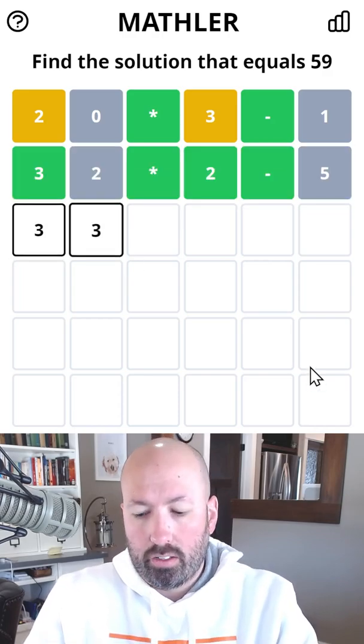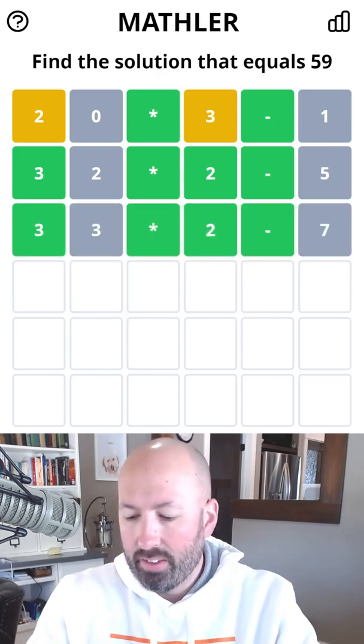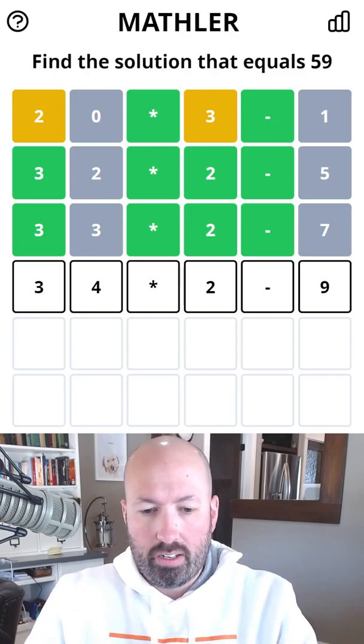Okay, so it's not 32. So let's try 33. Okay, so we got unlucky. It's got to be 34 times 2, and then we subtract 9.